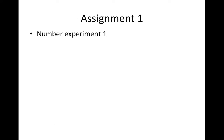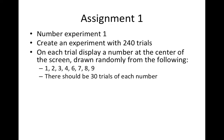This involves a number experiment. Specifically, I would like you to write code that does the following. You're going to have an experiment that has 240 trials. On each trial, you will show participants a number in the middle of the screen and this number should be drawn randomly from the following: 1, 2, 3, 4, 6, 7, 8, and 9. There are 8 digits. Each one should be shown 30 times. So 30 times 8 is going to give you the 240 trials.